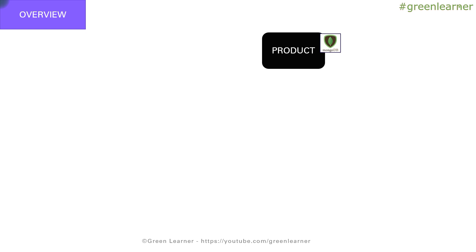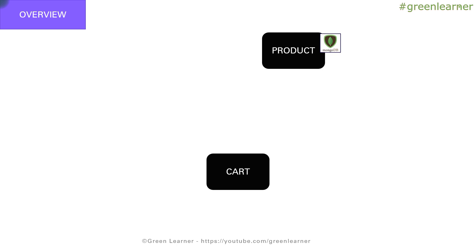When a user is coming to the site and going through the products, the user should be able to create the cart and wishlist. For that, I am going to create a cart service which is going to contain the information about the cart and wishlist. For the database I am going to use Redis here, because the cart information I am going to keep temporarily — around 30 to 45 days — after which I want to clear it.